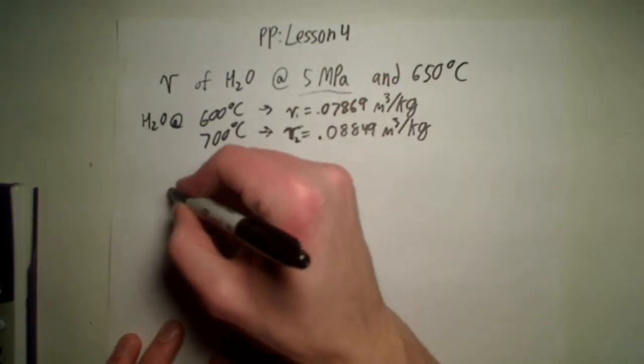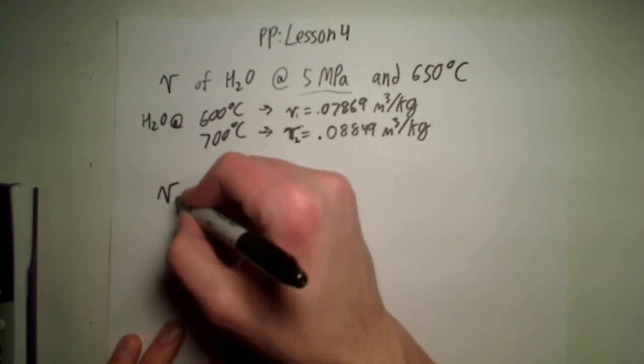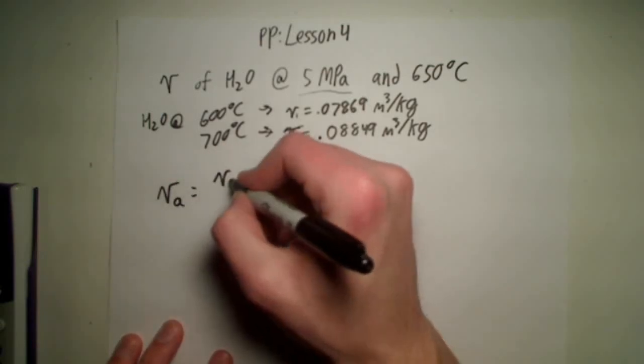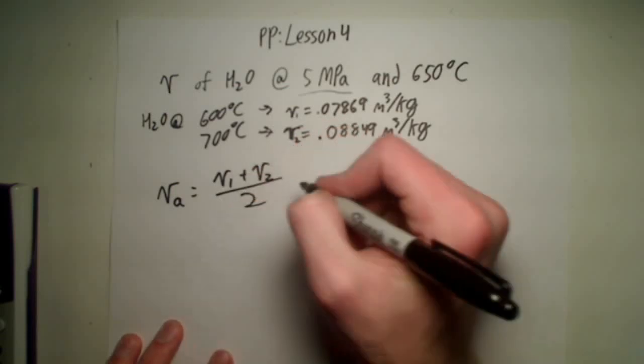So this is 1, this is 2, so the specific volume of the average is just going to equal specific volume 1 plus specific volume 2 all over 2.